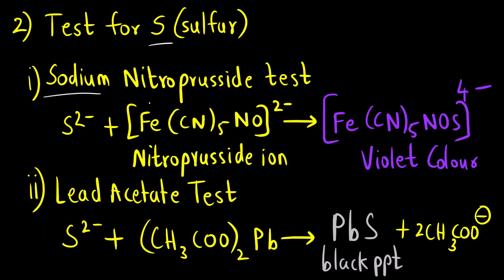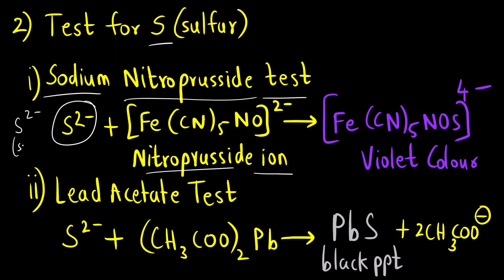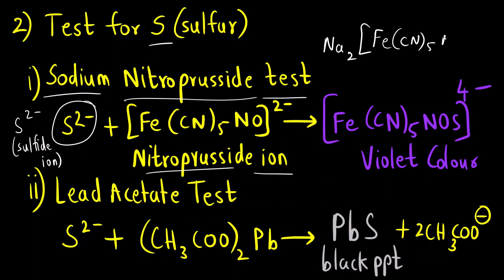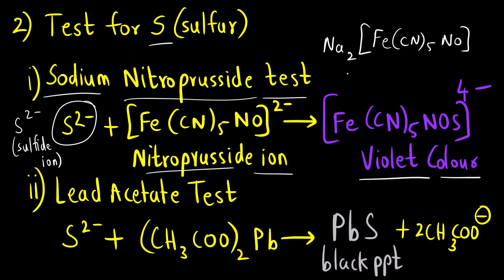For sulfur, there are two tests. The first is the sodium nitroprusside test. Sulfur is present in the extract as S2− (sulfide ion). This sulfide ion reacts with sodium nitroprusside, which is Na2[Fe(CN)5NO], to form a complex. The color of this complex is violet. So if you get a violet color in the Lassaigne's test, it indicates the presence of sulfur.